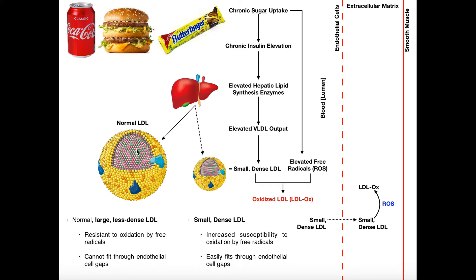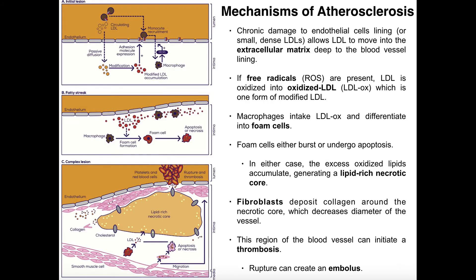Normal LDL is supposed to be larger and low density. However, when you have chronic insulin elevation, we actually see a lot more small dense LDLs. These small dense LDLs are abnormal. Number one, they have increased susceptibility to oxidation by free radicals — our reactive oxidative species, or ROS. Unlike normal LDLs which are too large, these smaller ones can easily fit through the gaps between endothelial cells that line a blood vessel. Along with the reactive oxidative species, the small dense LDLs can end up inside the extracellular matrix of a blood vessel, and this is going to lead us to where we see atherosclerosis.